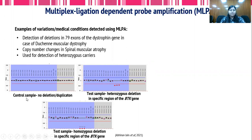In the representative image, in case of the control sample there is no deletion or duplication because all probes for the specific location are showing a ratio of 1. However, in case of the test sample, we can see that there is a heterozygous deletion in the specific region of the BTK gene, because the ratio of three of the probes is shown as 0.5.